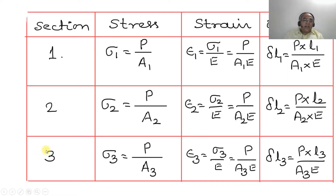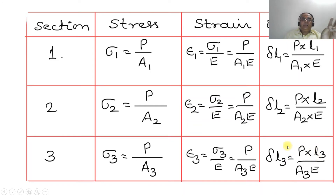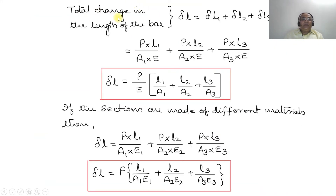Similarly for section 3, sigma3 = P/A3, and epsilon3 = sigma3/E = P/(A3·E). Therefore delta_L3 = P·L3 / (A3·E). We have now found the stress, strain, and extension for all three cross-sectional areas.